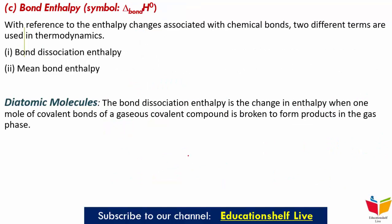Next is bond enthalpy. Chemical reactions involve the breaking and making of chemical bonds. Energy is required to break a bond, and energy is released when a bond forms. It is possible to relate heat of reaction to changes in energy associated with breaking and making of chemical bonds. In thermodynamics, two different terms are used: bond dissociation enthalpy and mean bond enthalpy.